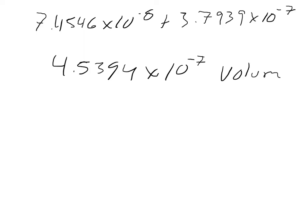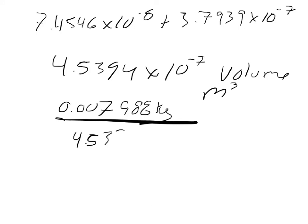So that's the volume in cubic meters of the whole coin. And so we got to take the mass over the volume. So 0.007988 kilograms divided by the 4.5394 times 10 to the negative 7th meters cubed is going to give us a density of 17,597 kilograms per cubic meter.